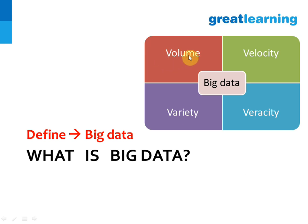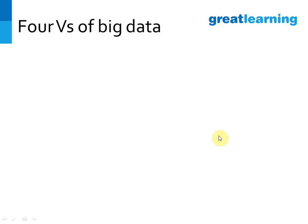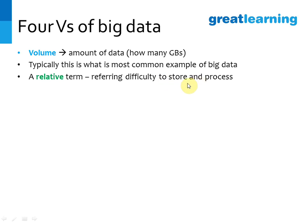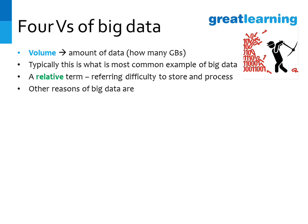Big data gets defined by volume, velocity, variety, and veracity. When people talk of big data, the first thing they talk about is volume — the amount of data, how many gigabytes, how many petabytes. It's a relative term: if your computer can't even open a 100 MB Excel file, then 100 MB itself is big data for you. It refers to the difficulty in storing and processing the data.